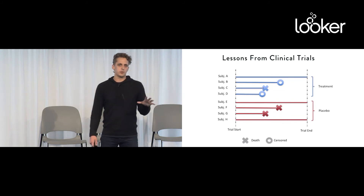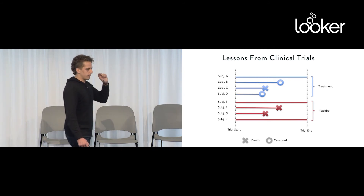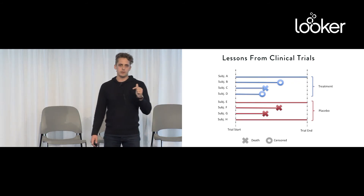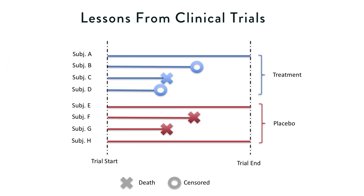I'm going to spend a little bit of time giving you intuition for how this technique actually works under the hood. It's relatively straightforward, and once you get the intuition for the trick here, you'll be able to apply it to some of your own problems. Here we've got eight subjects in a clinical trial. You have a trial start date and a trial end date. The X's here mean a patient died — one patient in the treatment arm died and two patients in the placebo arm died. The circles are what's really interesting — these are the patients who are lost to follow-up. We don't have data for them after a certain point, because being in a clinical trial is a pain: you have to go to the doctor every week, fill out forms, fill out survey questions, get blood drawn.